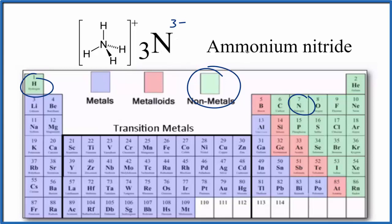So in answer to our question, NH4 3N, ammonium nitride, is an ionic compound. I recommend that you memorize that NH4, when you see that we're talking about the ammonium ion with a 1-plus ionic charge.